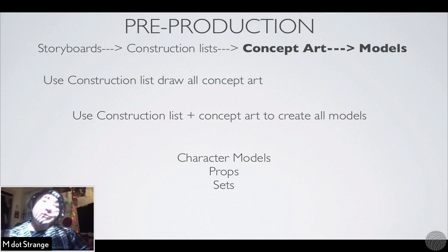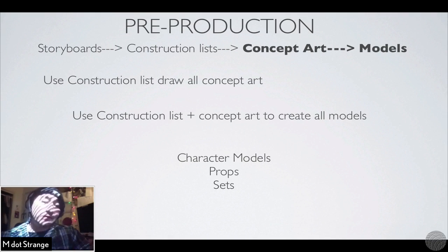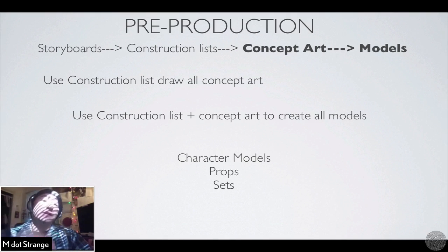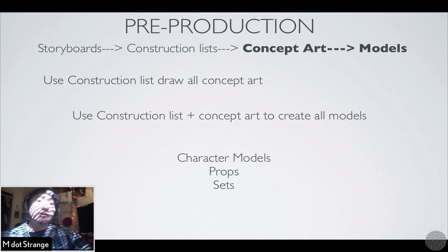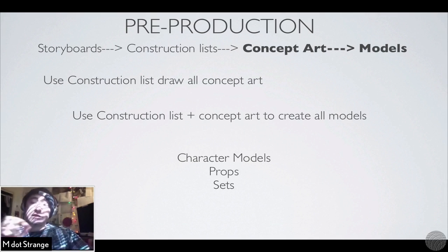The thing with this workflow is we're trying to eliminate the guesswork. You never want to get to a point in production where you go, "What do I do next?" Because that's when you get lost, that's when you start to lose time, that's when you start to lose motivation, and that's when your production can fail. I break down my construction list into three basic categories: character models, props, and sets. I draw up this list, start drawing my concept art, and break it down into those three different categories.